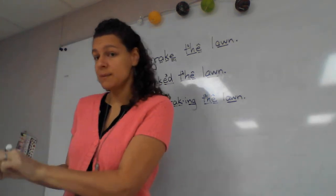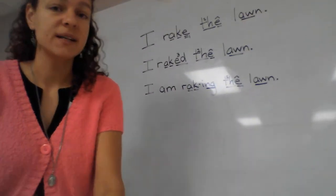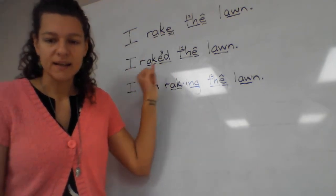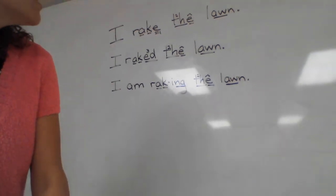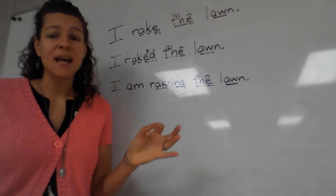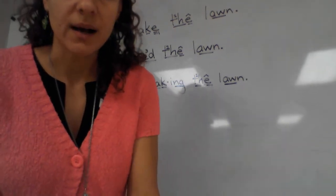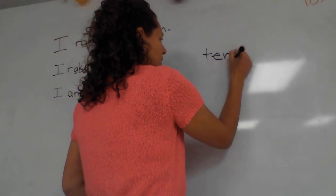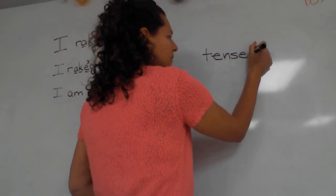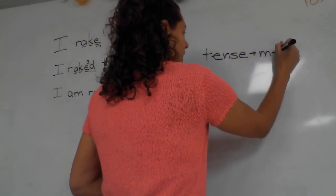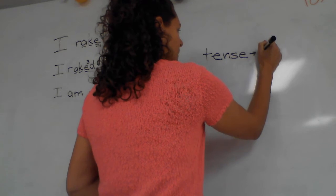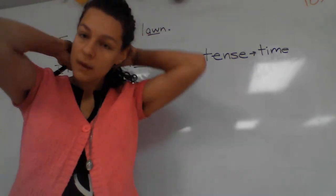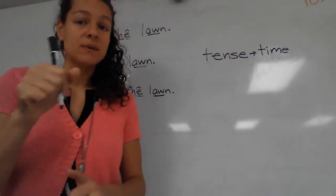It doesn't matter if it just passed or it was past a really long time ago. We're always going to use the past tense ending, which for our regular verbs is -ed, -d, -t. We call it past tense ending because tense just means time when we're talking about English verbs. So tense means time. When we talk about the tense of the verb, it just means: when did the action happen? Tense means time. So when we say past tense ending, we're just saying the action was in the past — it was in past time.